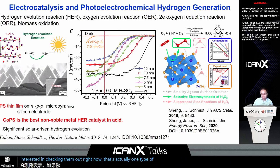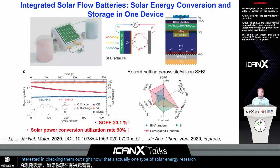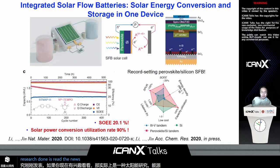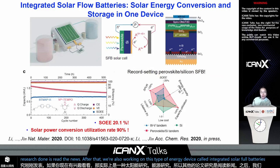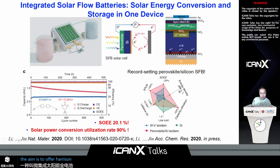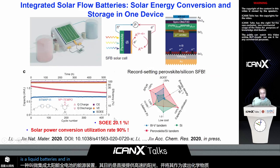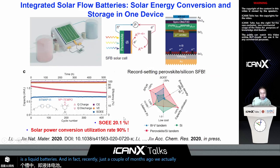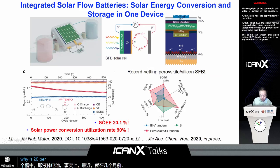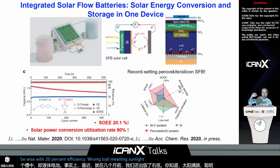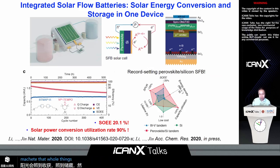We are also working on another type of energy device called integrated solar flow batteries, where the aim is to harvest sunlight directly and store it as redox chemicals in a tank as a flow battery — a liquid battery. Recently, just a couple of months ago, we published a record solar flow battery device with 20% efficiency round-trip, meaning sunlight harvest, storage, and delivery back out as electricity. That whole cycle is 20% — quite exciting, and we'll continue to work on that.